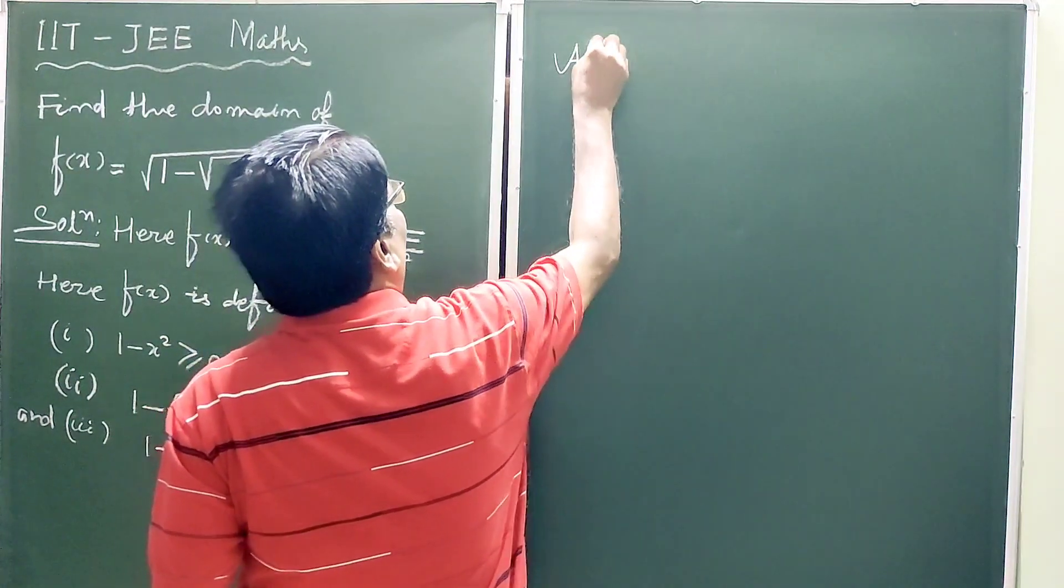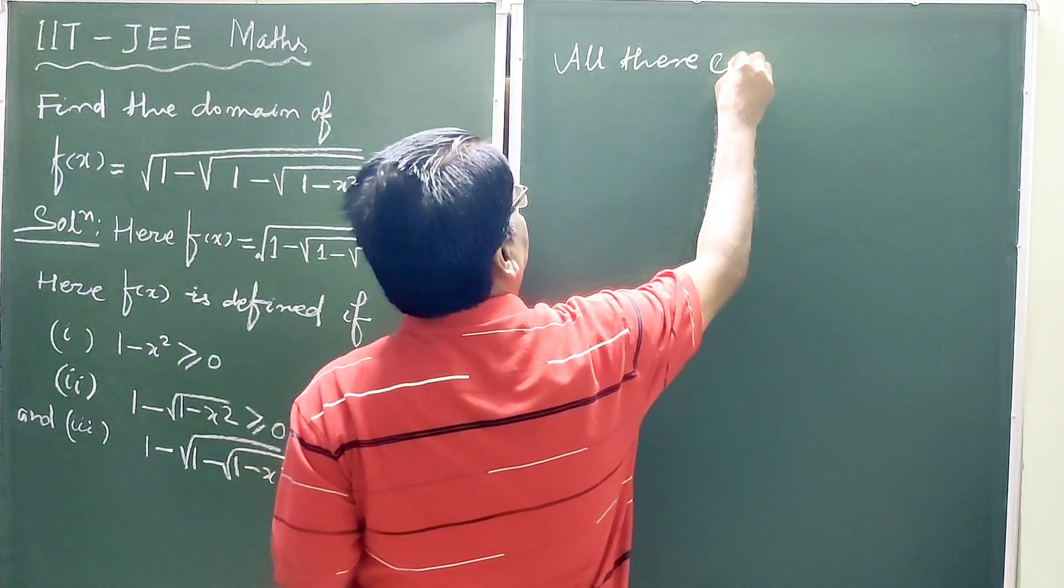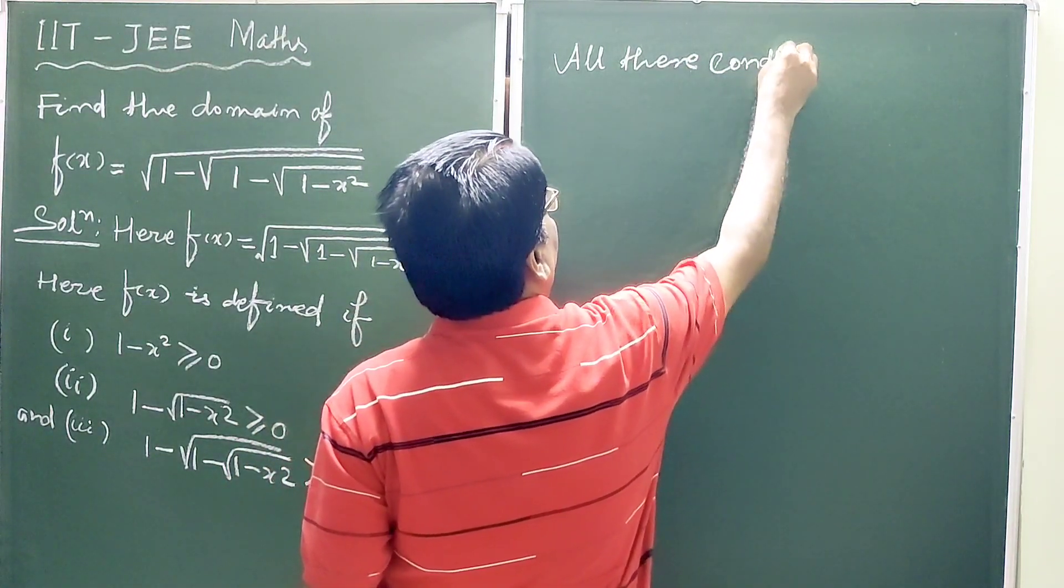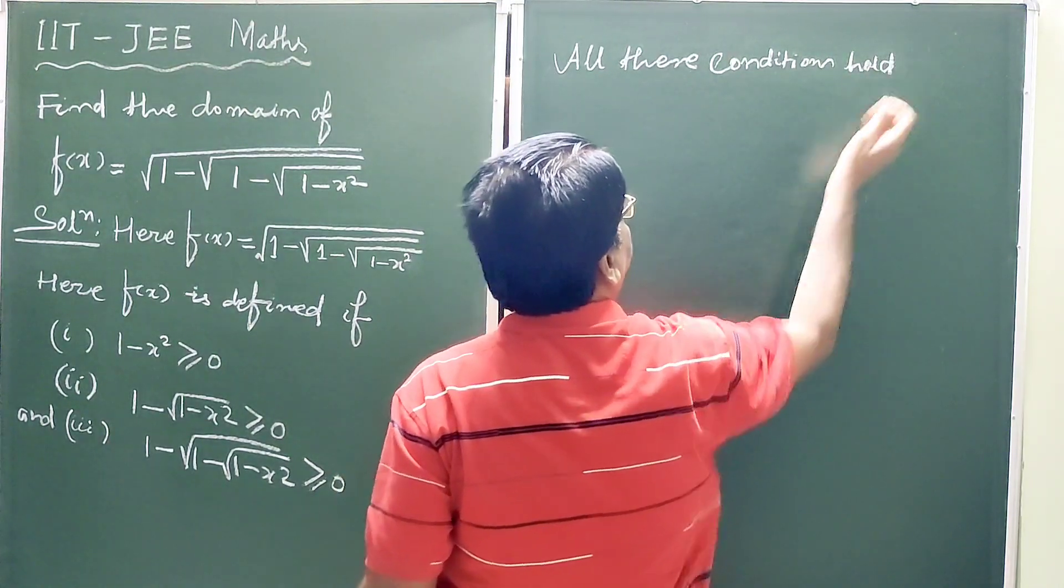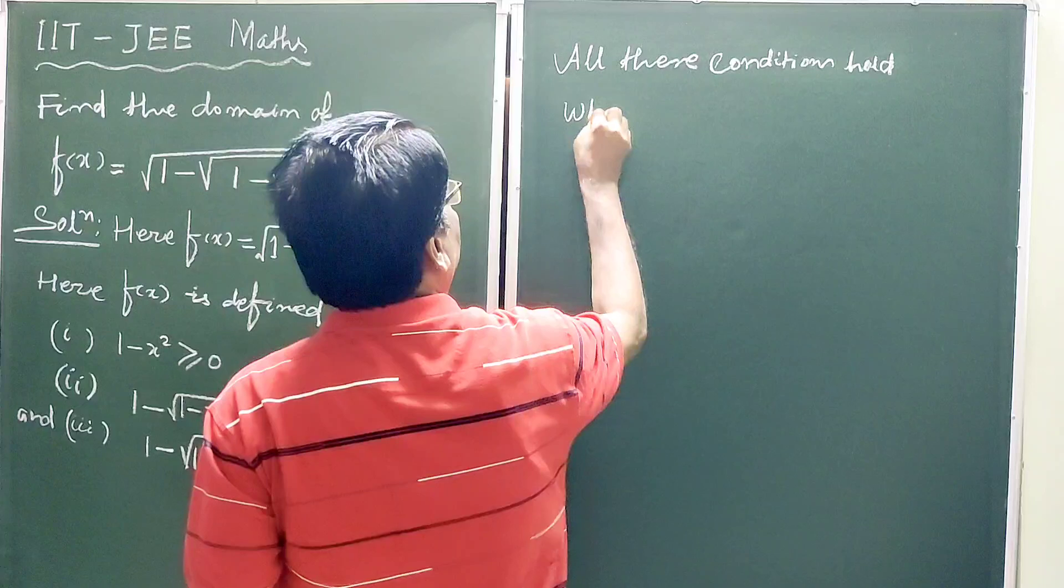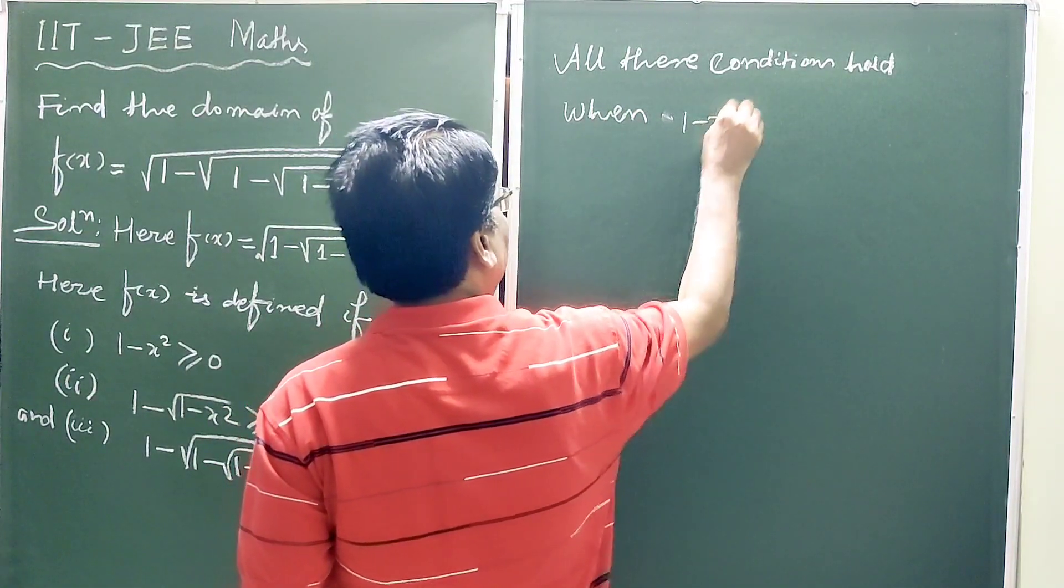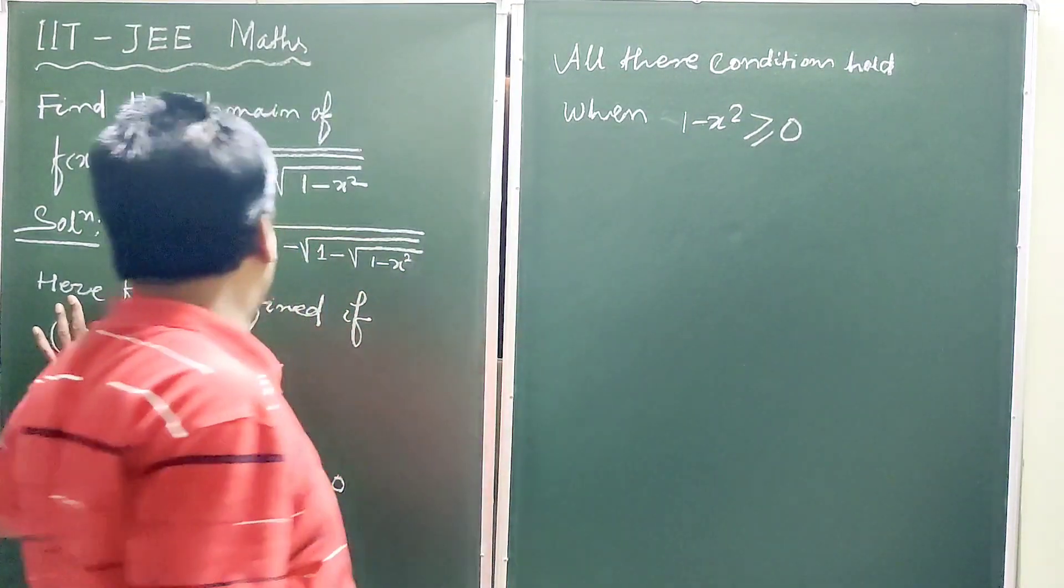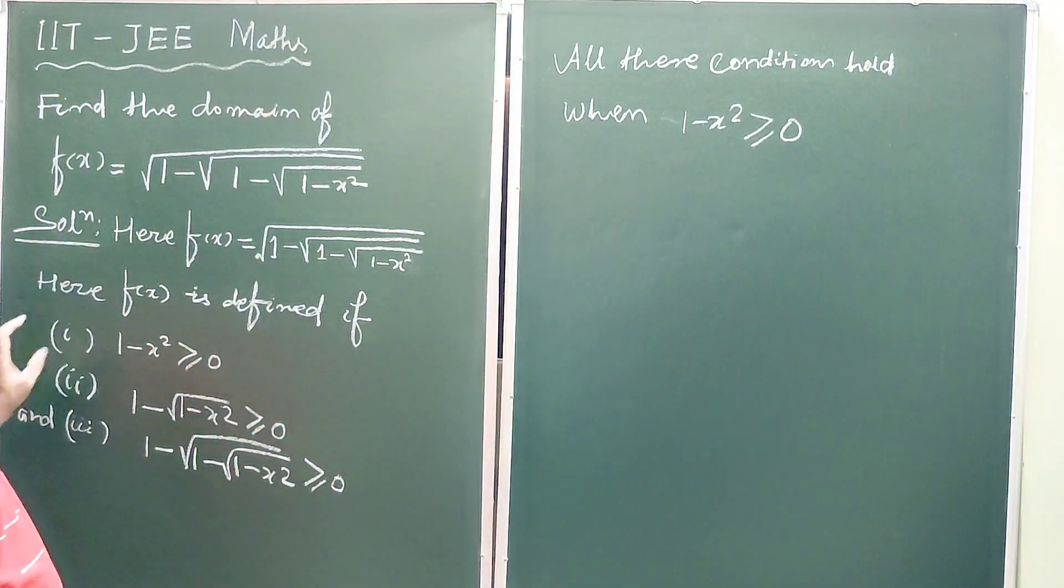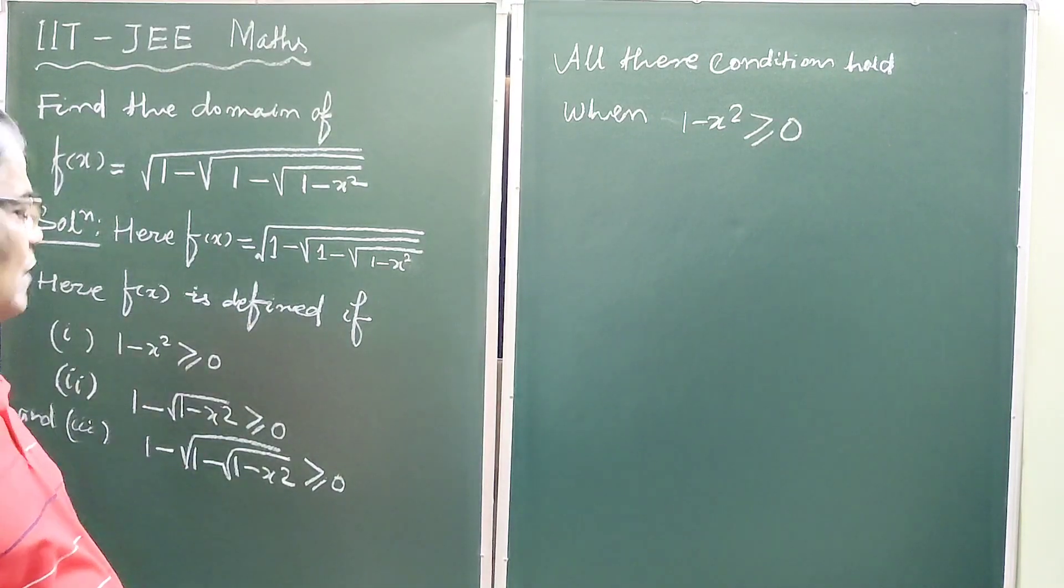And all these conditions hold when 1 - x² ≥ 0. So if you take 1 - x² ≥ 0, the other two conditions also automatically will be satisfied.